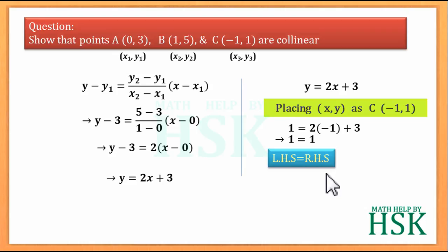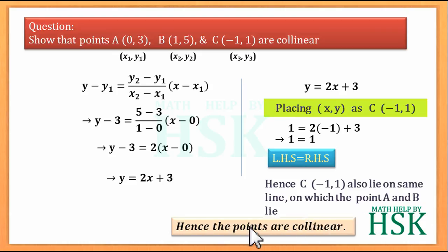Since the point C (-1, 1) also lies on same line on which the points A and B lie, therefore the points A, B and C are collinear.